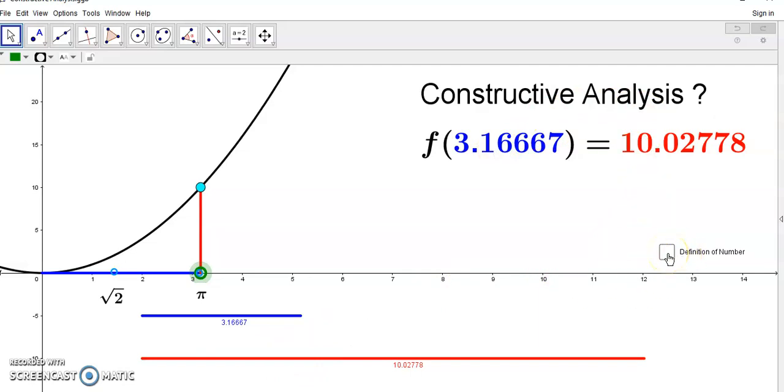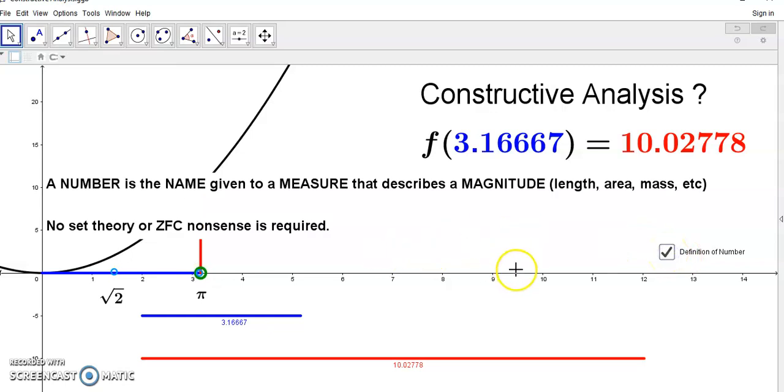These problems have arisen because mainstream academics have never understood what the definition is of number. There's a very simple definition. Forget about that idiot Frege and anyone else who came before me and after Euclid. A number is the name given to a measure that describes a magnitude. And a magnitude can be anything. As you see in this example here, it's lengths or distances, but it can be areas, mass. By the way, these lengths here are actual distances. They're not numbers, unless they're rational numbers. Unless they're distances which can be measured by the chosen unit or the standard unit.